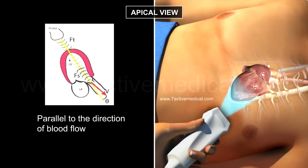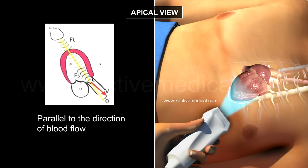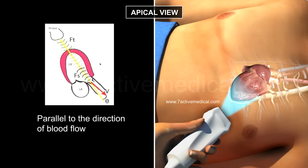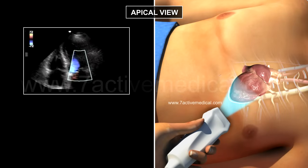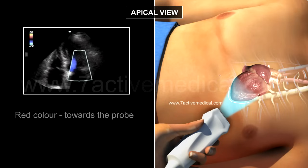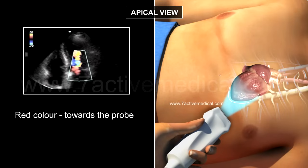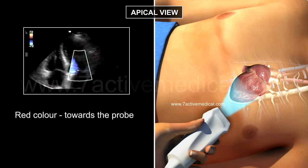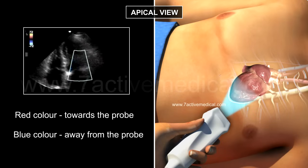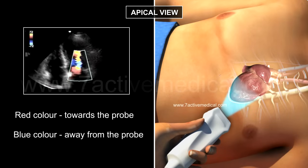The apical view is the best position to estimate hemodynamics, as in this position the ultrasound beam is parallel to the direction of blood flow, thereby allowing the Doppler shift to be visualized clearly. With a color Doppler, red color indicates that the direction of blood flow is towards the probe, while blue color indicates that the direction of blood flow is away from the probe.